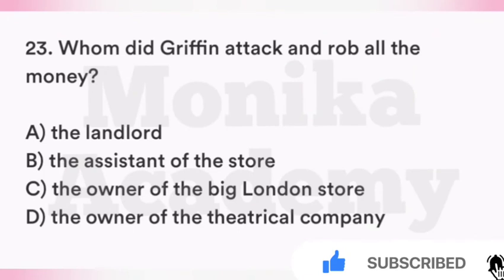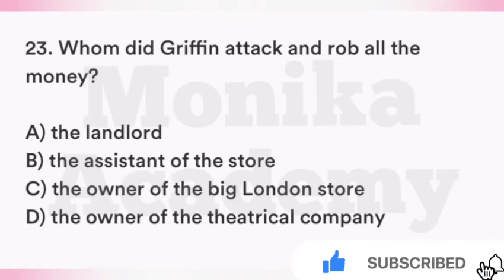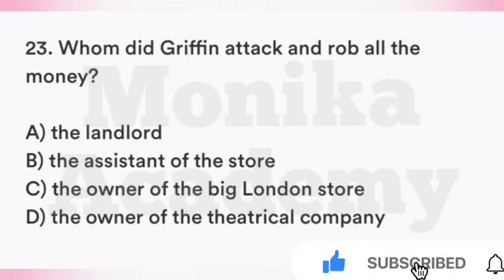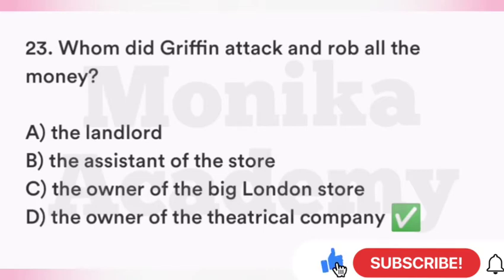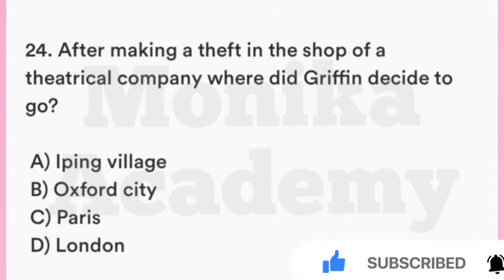Question 23: Whom did Griffin attack and rob all the money from? Option A: The landlord. Option B: The assistant of the store. Option C: The owner of the big London store. Option D: The owner of the theatrical company. The correct answer is D — the owner of the theatrical company. Griffin ने theatrical company के owner पर attack किया और उनके पैसे चोरी किए.